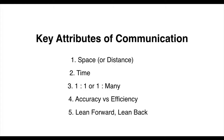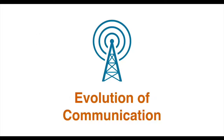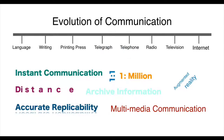Then we looked at the evolution of communication. We started with language and said that the human capacity to convey abstract thoughts was something that set our species apart from all others. This was followed by writing, which means you can codify knowledge and hence preserve it — keeping it accurate across distance and across time. Then the advent of the printing press meant mass production of information and dissemination across time and space without losing accuracy.